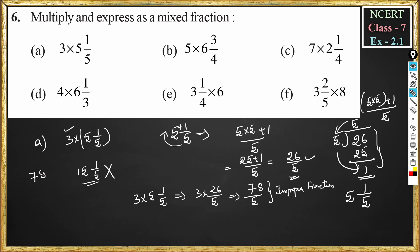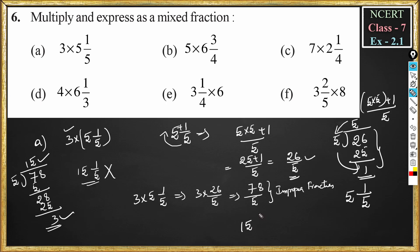To convert 78/5 to a mixed fraction, we divide 78 by 5. 5 fives are 25, so 5 fifteens are 75 and the remainder is 3. To convert this to a mixed fraction, we write the quotient 15 as the whole number, then the remainder 3 in the numerator, divided by the divisor 5.